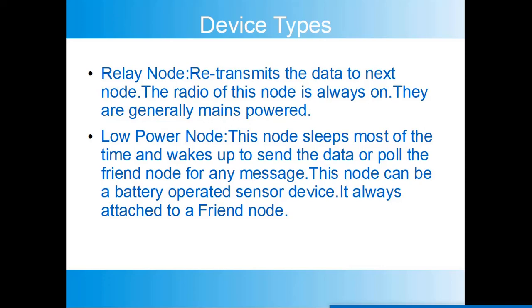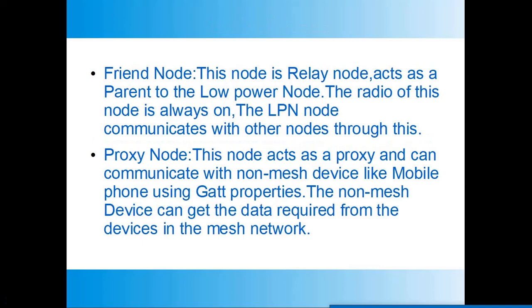The next type is the low power node, or LPN. This is a sensor node that sleeps most of the time and wakes up to send data or poll the friend node for messages. It can be a battery-operated sensor device and is always attached to a friend node — it communicates with the mesh network only through the friend node. The friend node is a relay node that acts as a parent to the LPN; its radio is always on, and it acts as a proxy to communicate with non-mesh devices like mobile phones or tablets.